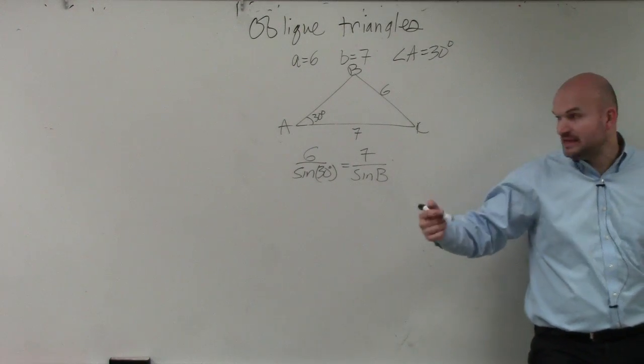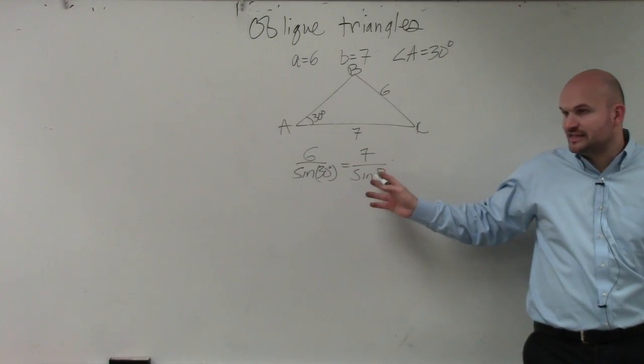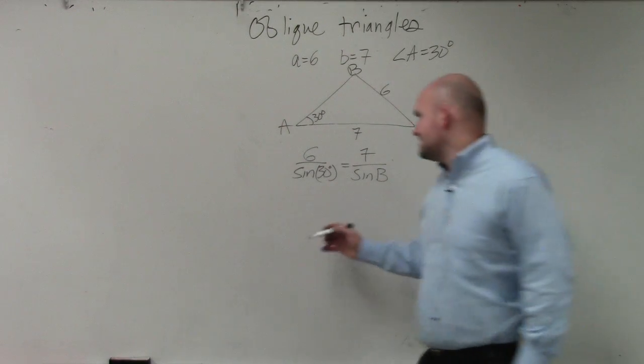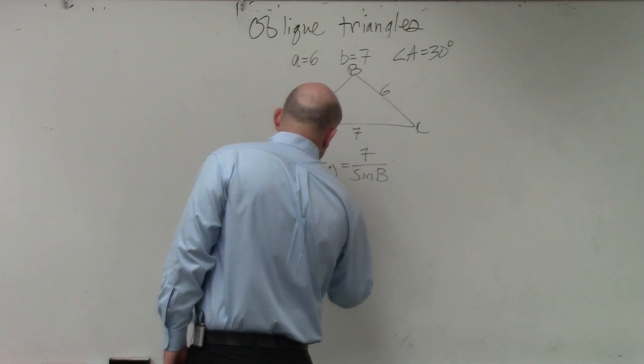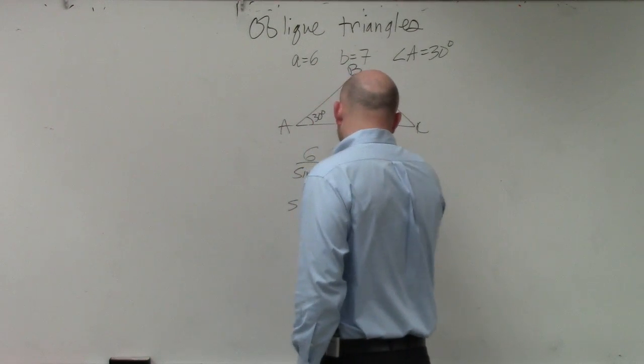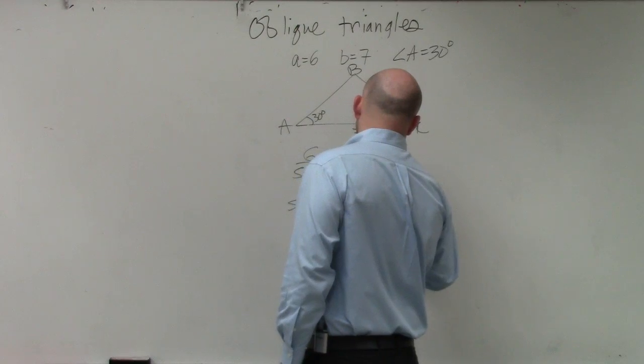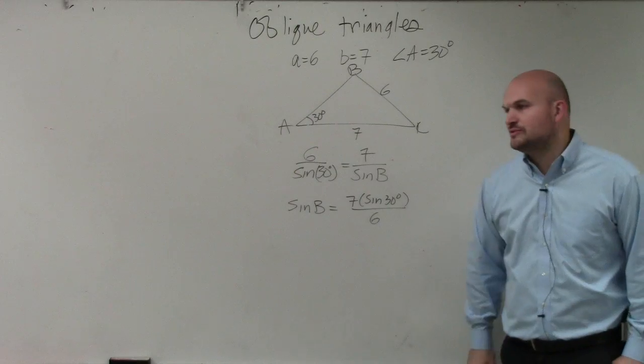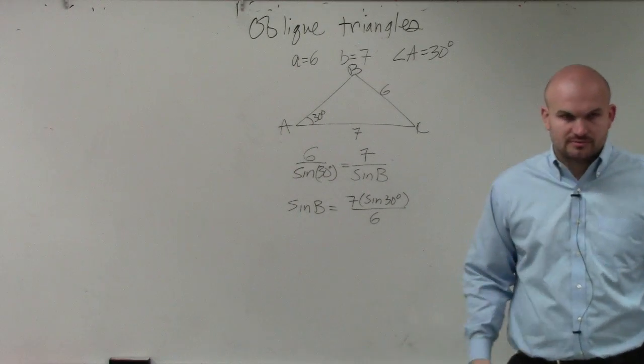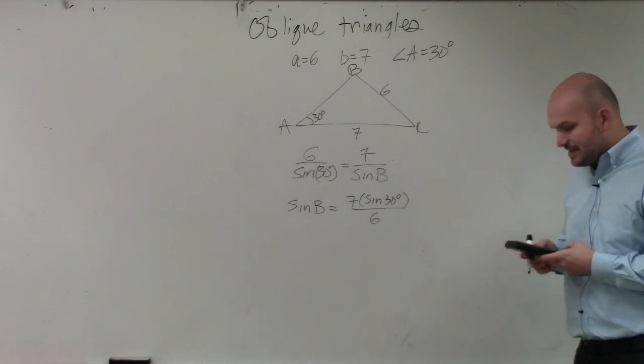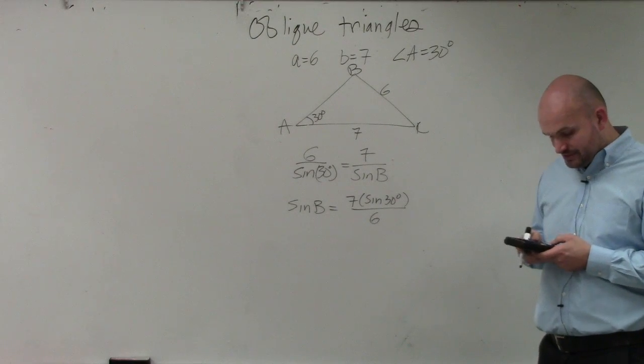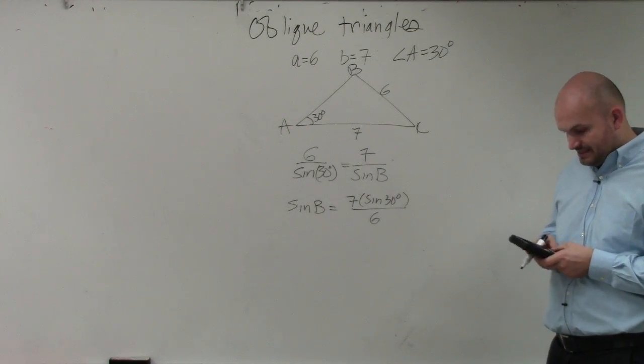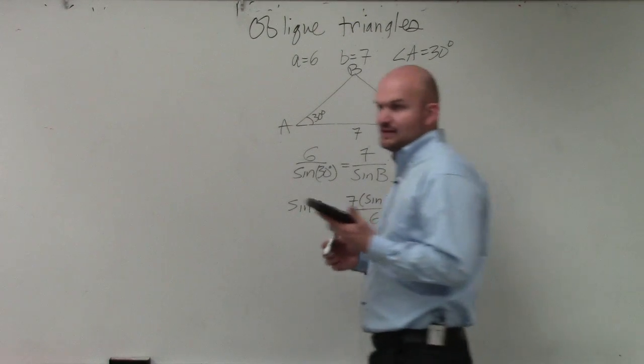Then you could apply cross multiplication or basically just get the B off the bottom. You'd multiply by sine of B on both sides and then divide by the reciprocal. But basically, what you have is the sine of B is going to equal 7 times the sine of 30 degrees divided by 6. I'm just doing this solving stuff quicker because it's to save time. All right. So now, let's go and evaluate what that would be. So I do 7 times the sine of 30 degrees and then divide that by 6.